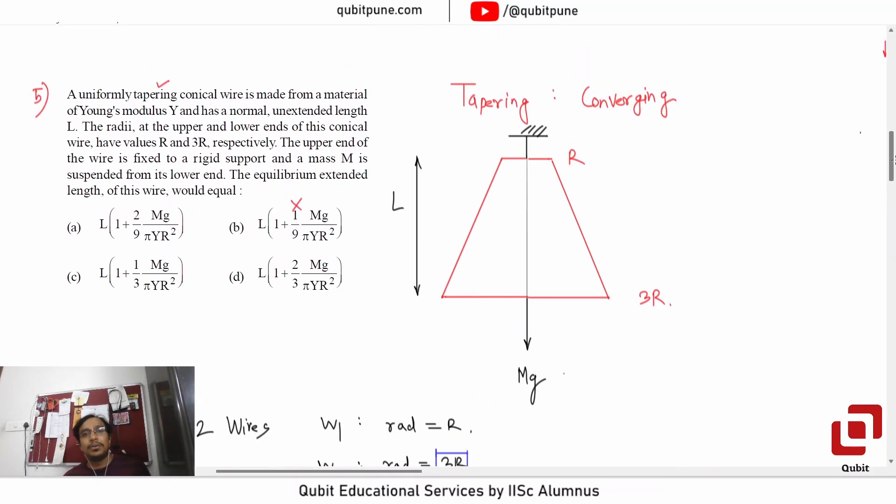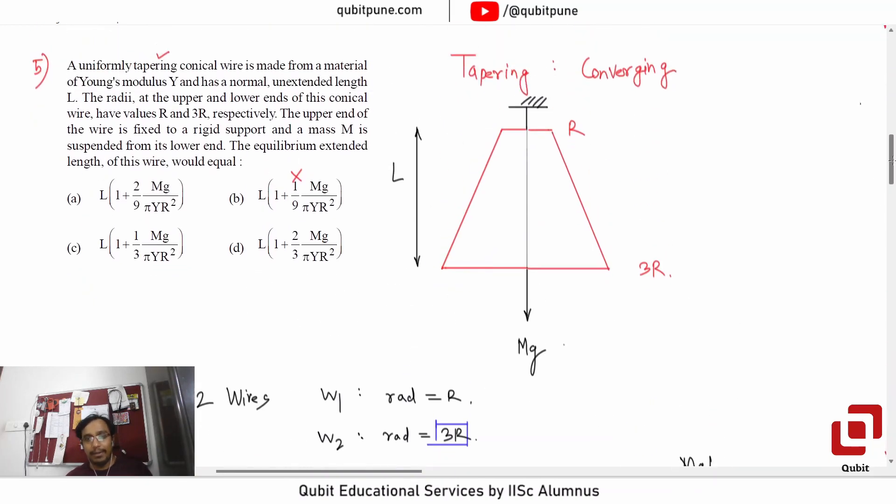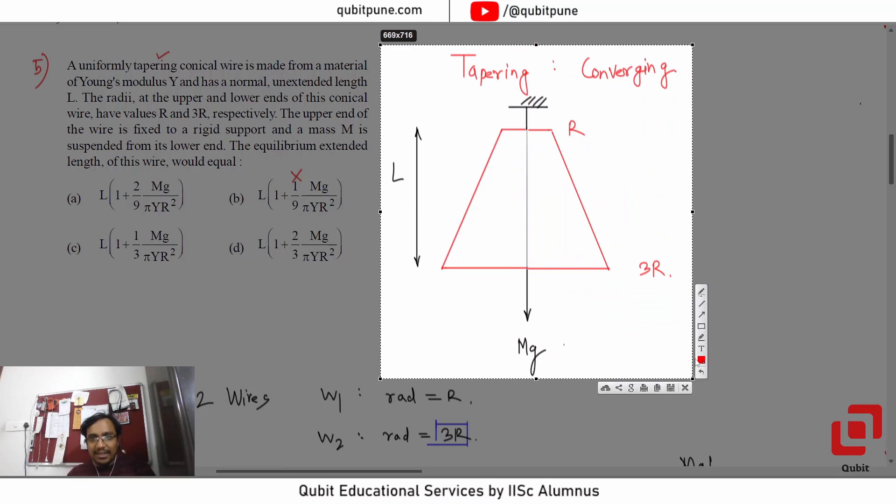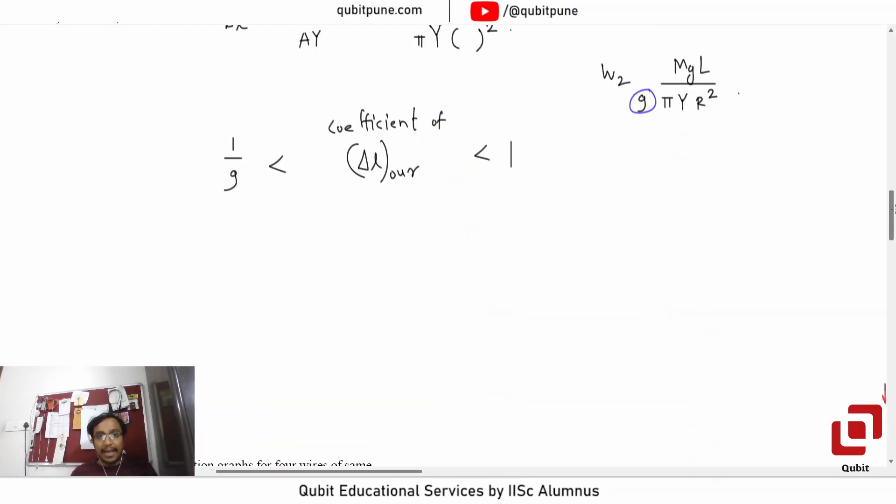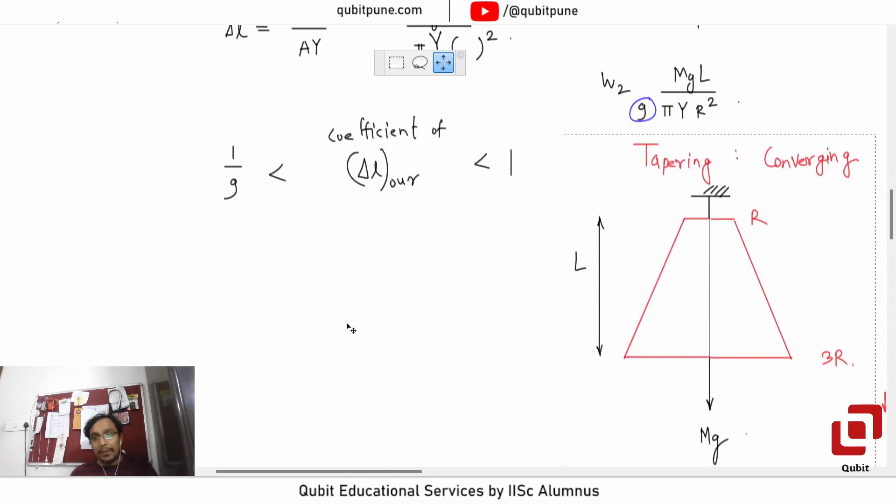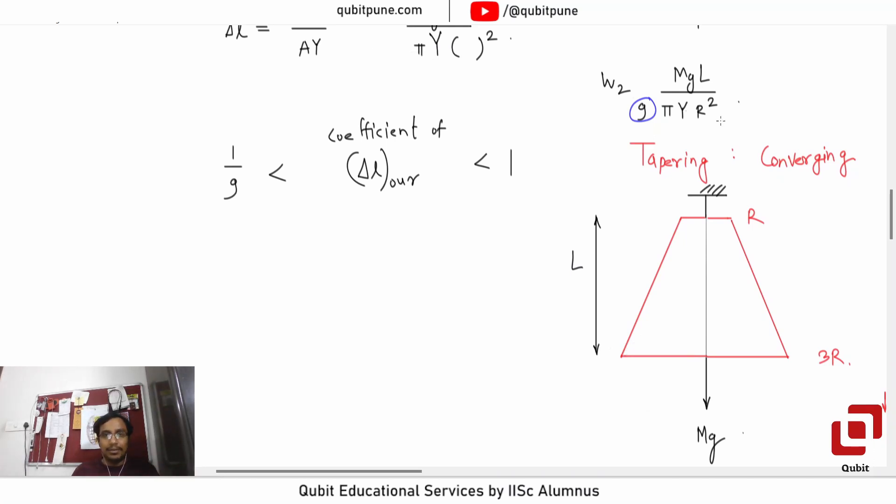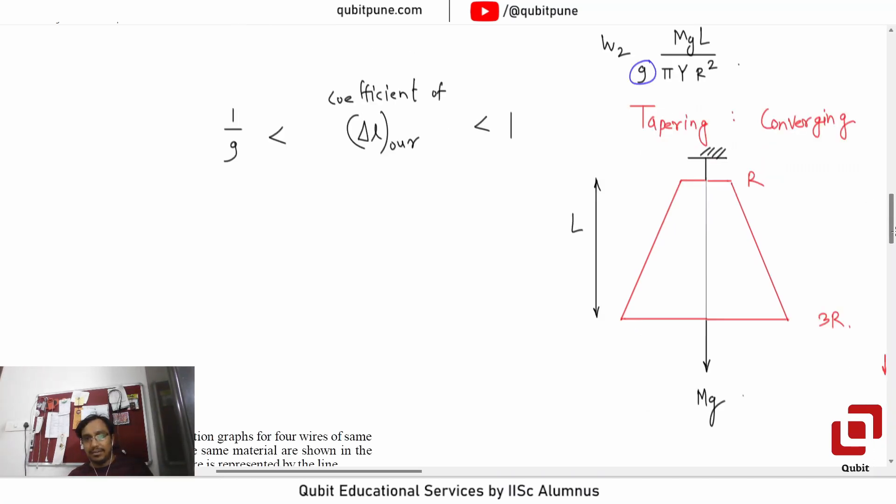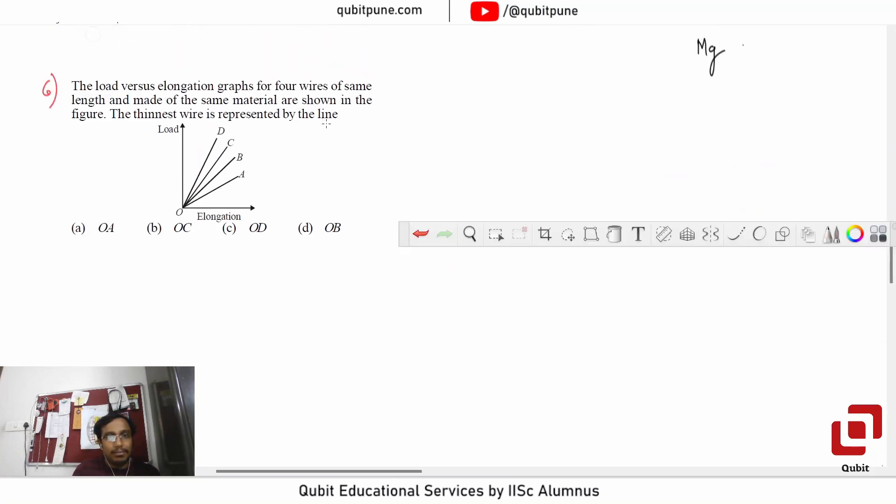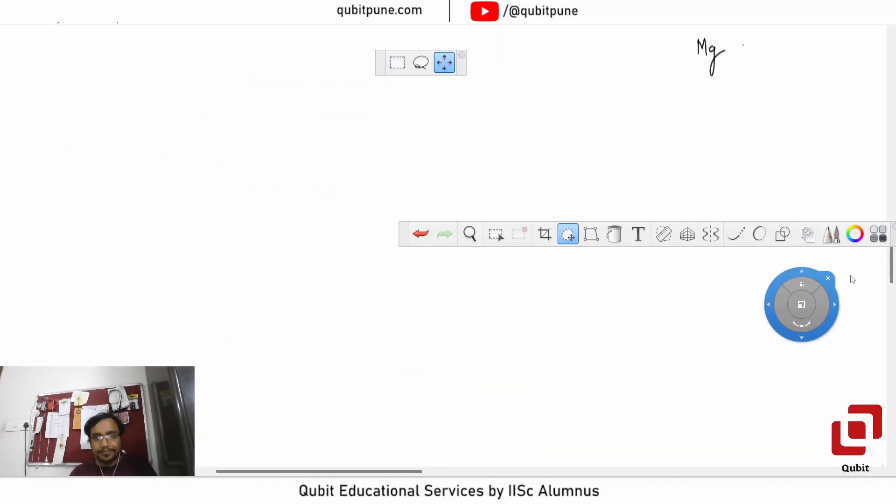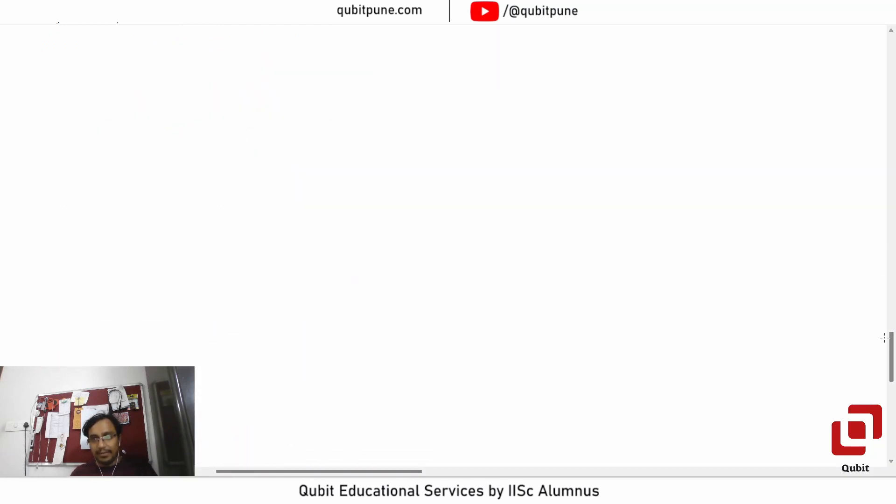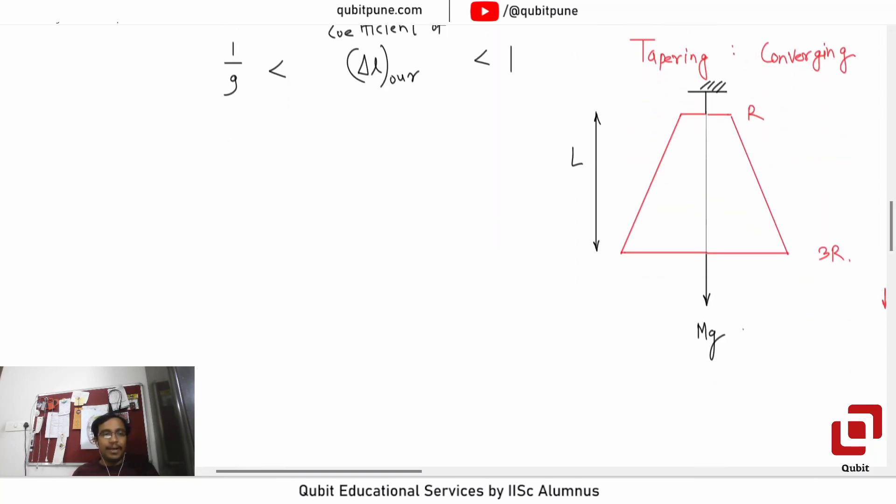We have to now try something else to solve this particular problem. And what will that be? That will be integration. Now, why is integration required? We should first argue for that. Why is integration required first of all to solve this problem?